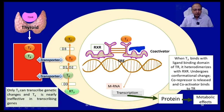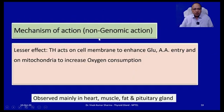Only T3 can transcribe genetic changes; T4 is nearly ineffective in transcribing genes, so the main genomic effect is produced by T3. There is also a minor non-genomic action where thyroid hormone acts on the cell membrane to enhance entry of glucose and amino acids, and on mitochondria to increase oxygen consumption, producing an immediate increase in metabolic activity. These non-genomic effects are primarily observed in heart, muscles, fat, and pituitary gland. Notably, T4 is equipotent to T3 in non-genomic action, unlike genomic action where T3 is far more potent.